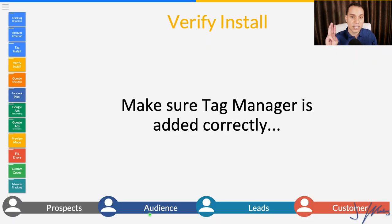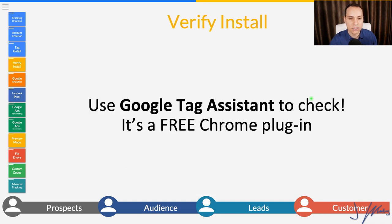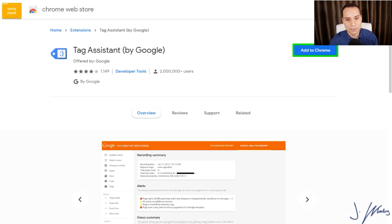So that's three different ways to install the Tag Manager code on your site. Now we need to make sure it's actually there before we add anything. Let's go ahead and verify the install. We'll use the Tag Assistant plugin — this is a Chrome plugin. Search for 'Google Tag Assistant,' add to Chrome, accept the settings, and click Done. Whenever you want to use it on a webpage, click the plugin, click Enable, and then refresh the page.